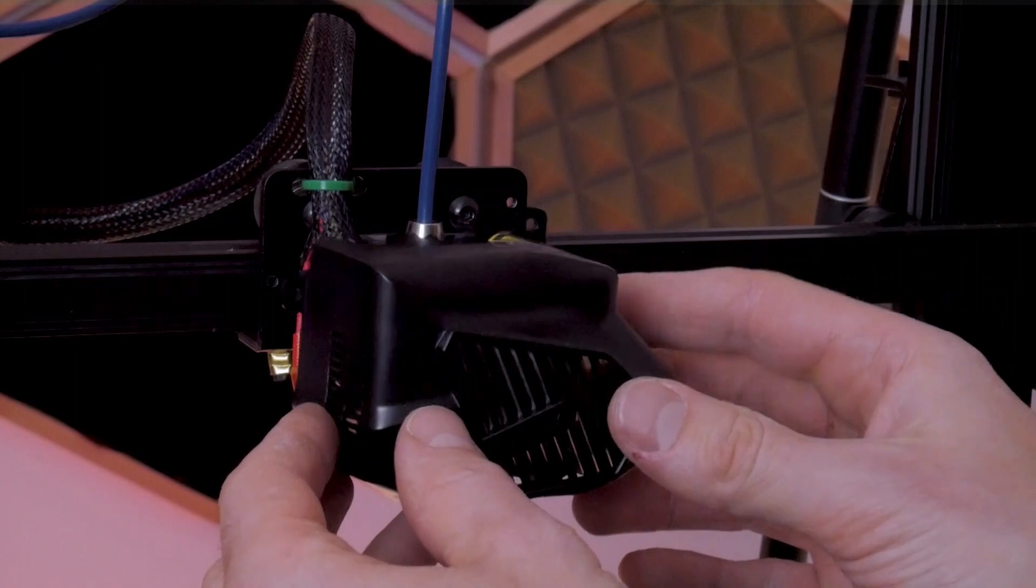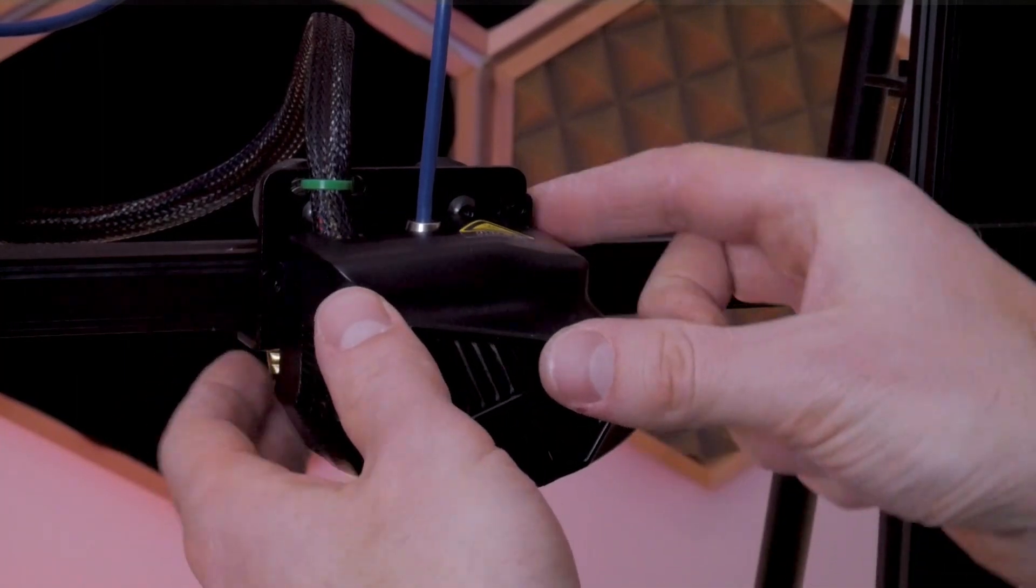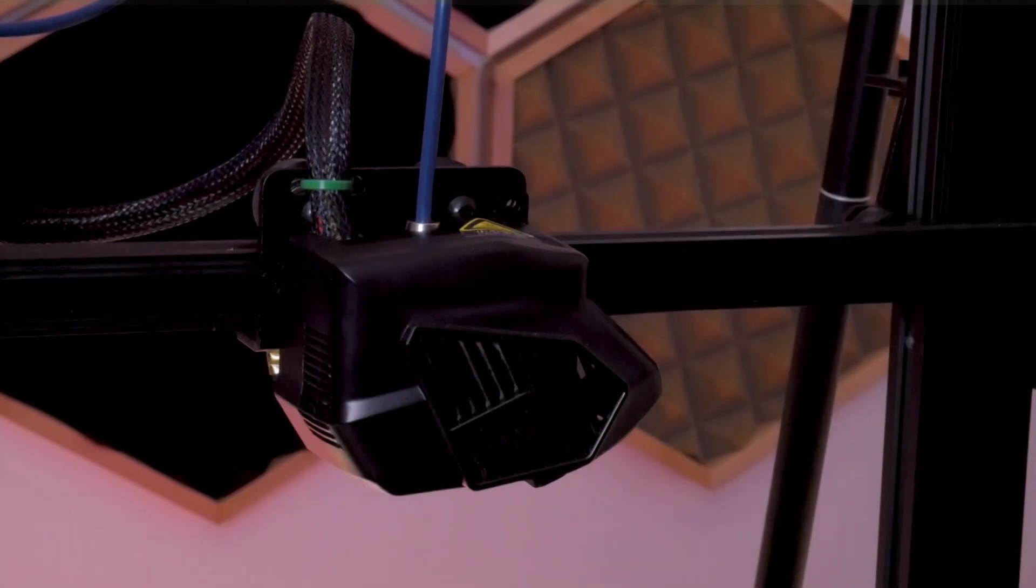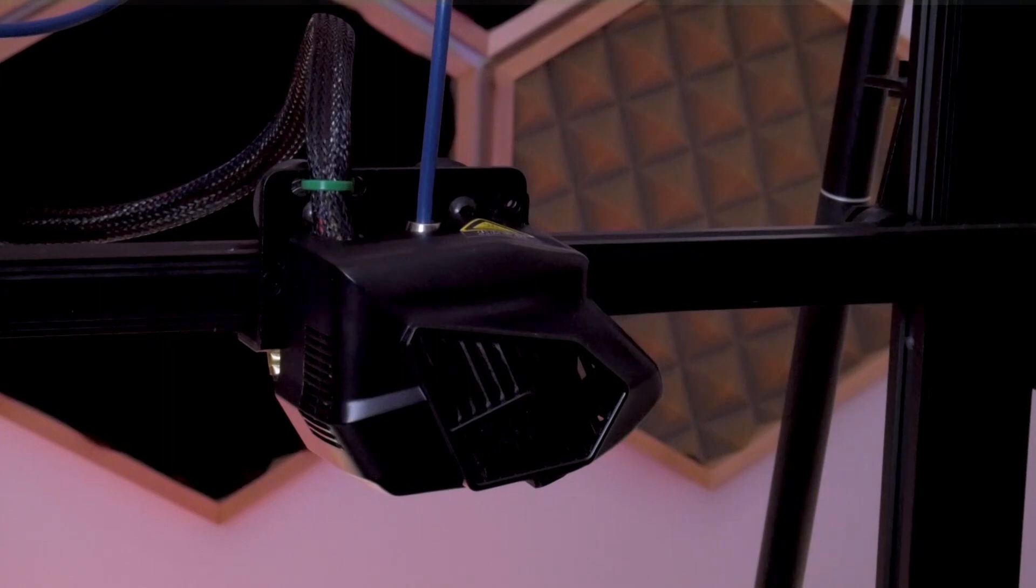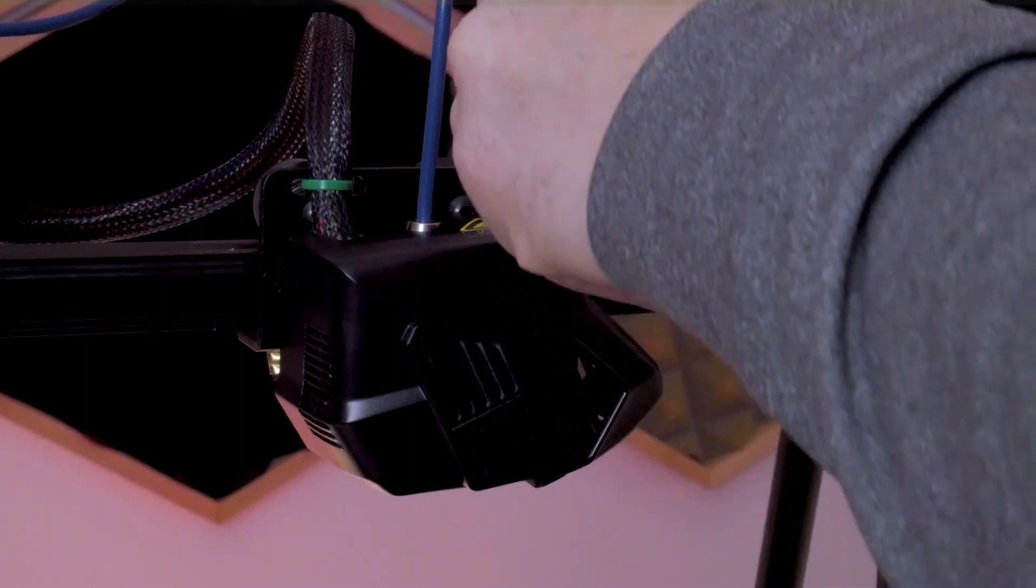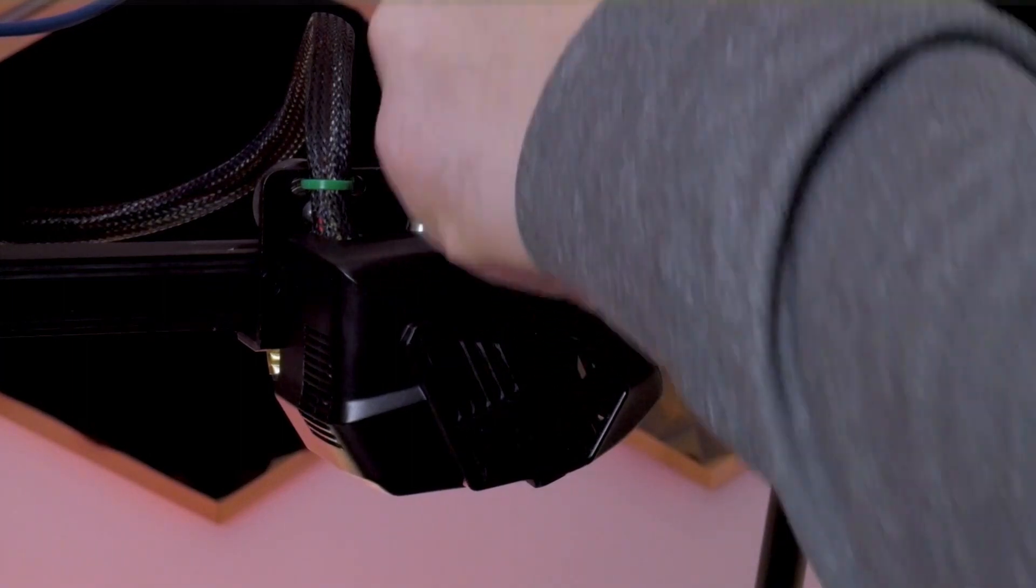Finally, the fan shroud should fit easily back into place and there shouldn't really be any resistance because nothing should be in the way. The three original button head cap screws should fix the fan shroud into place and you're done.